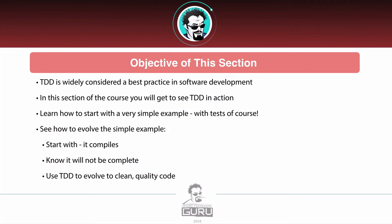In this section of the course, test-driven development is widely considered a best practice. What I want you to see is TDD in action. We're going to start with a very simple example and then evolve it. We'll start with getting it to compile — it will not be complete, it's going to be ugly, not quality code — and then use a TDD approach to evolve it into clean, quality code. We're going to see how those changes work.